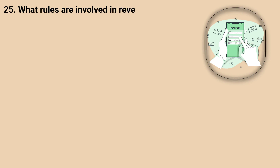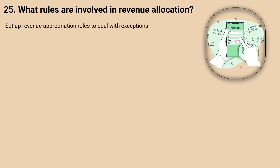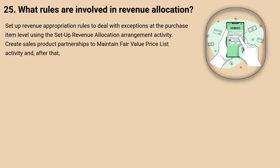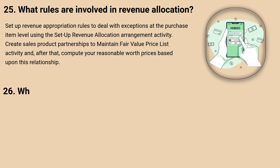25. What rules are involved in revenue allocation? Set up revenue allocation rules to deal with exceptions at the purchase item level using the Set Up Revenue Allocation Arrangement Activity. Create sales product relationships to maintain a fair value price list activity and then compute your reasonable worth prices based upon this relationship.